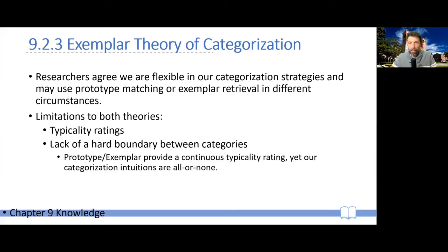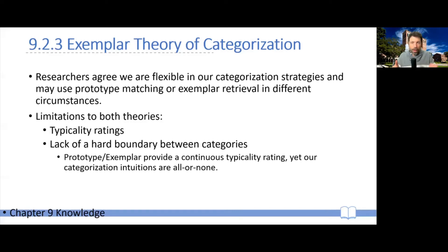Second, both the prototype and exemplar theories give you a continuum — something is super typical or completely atypical of a category. And yet our intuitions don't really work this way. A tomato is either a fruit or a vegetable — it's not 51% fruit and 49% vegetable. When we see something, we just categorize it: you're in or you're out. It's all or none. Neither prototype nor exemplar theory gives you a good cutoff for that.